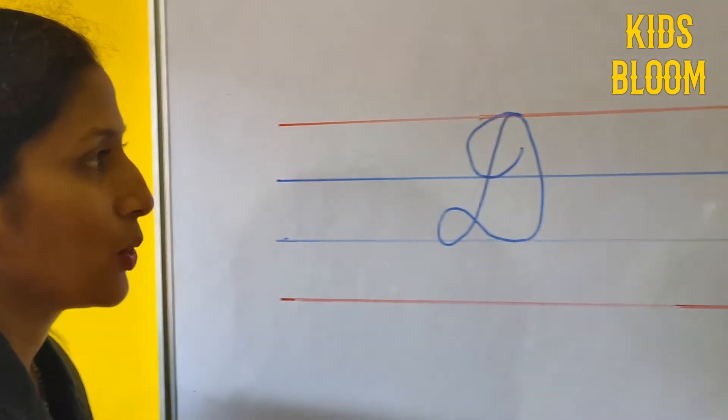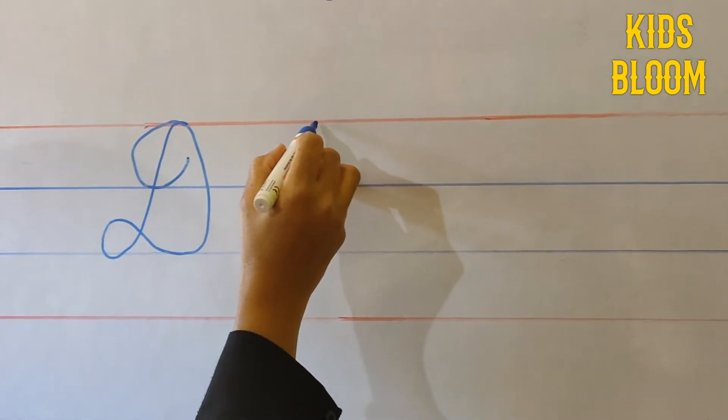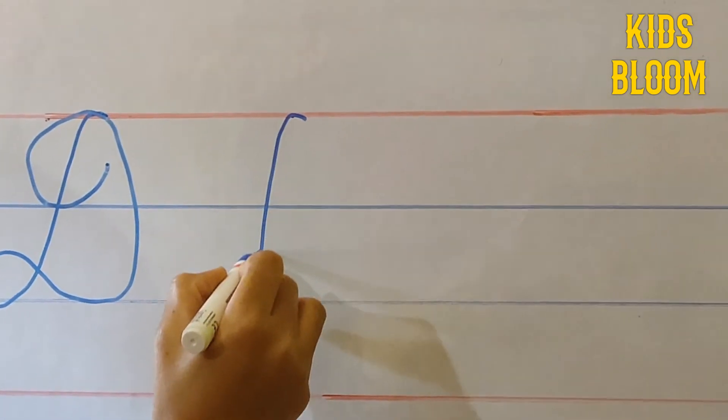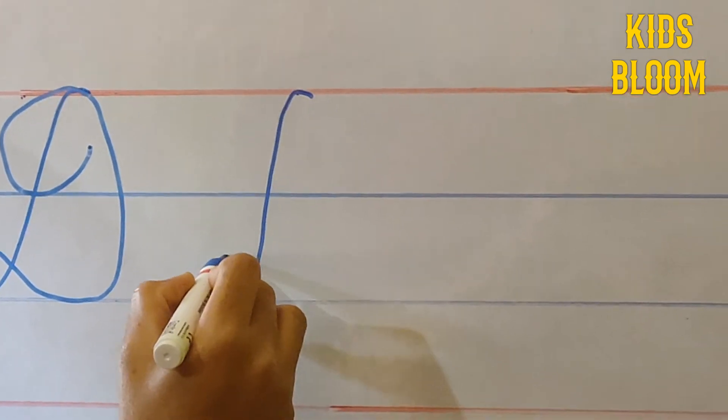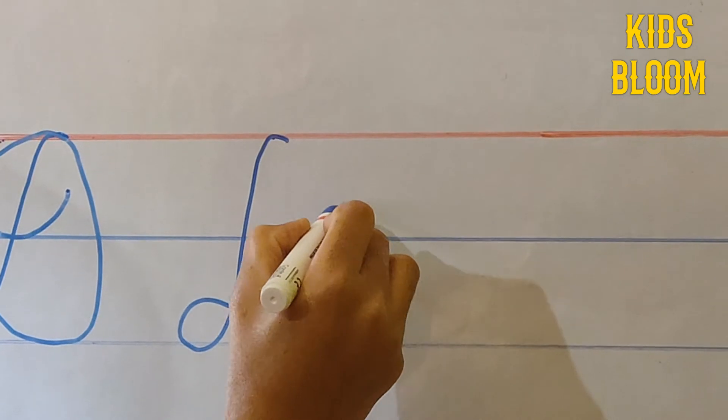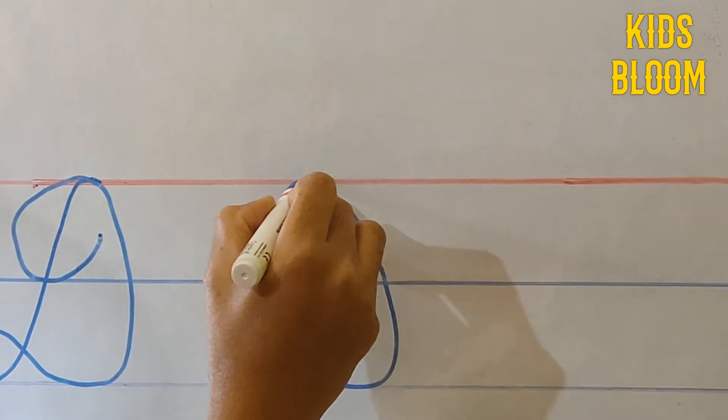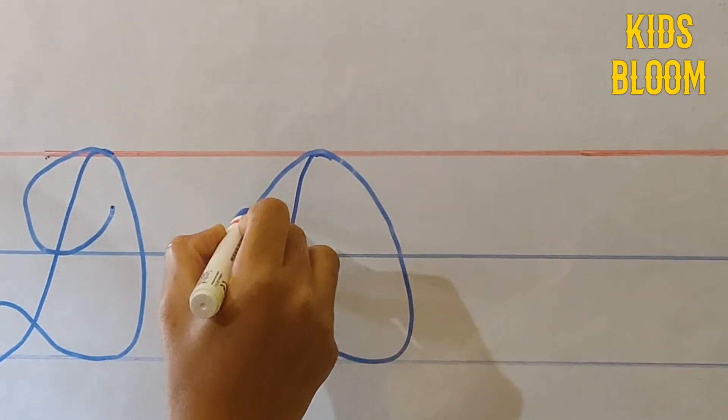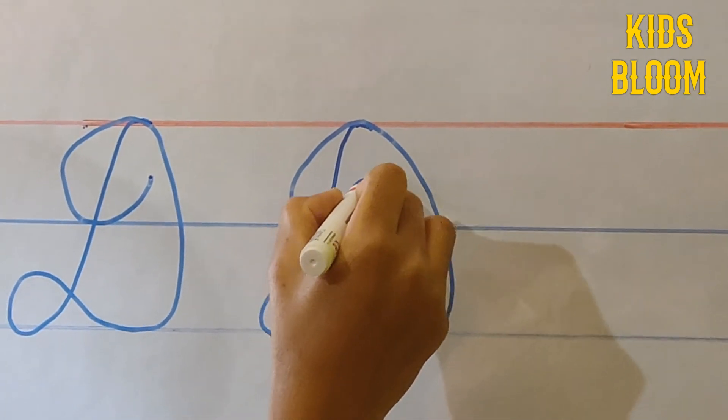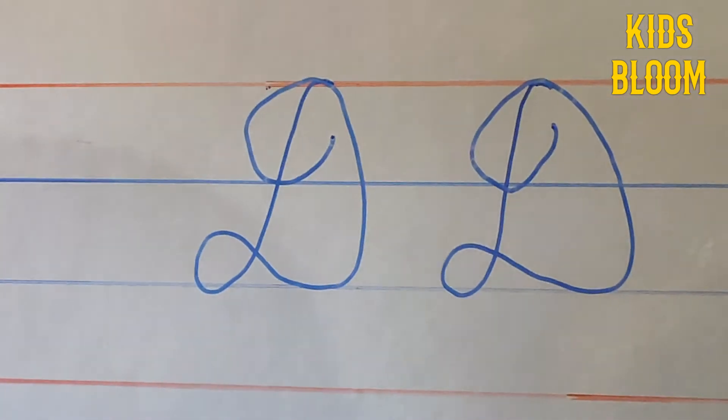Once again I will show you. Now hold your pencil on the red line, drag the pencil to the third line, drag it to the third line and again take upward, turn this curve, bring it down to the second line and make a curve inside like this. This is our cursive D.